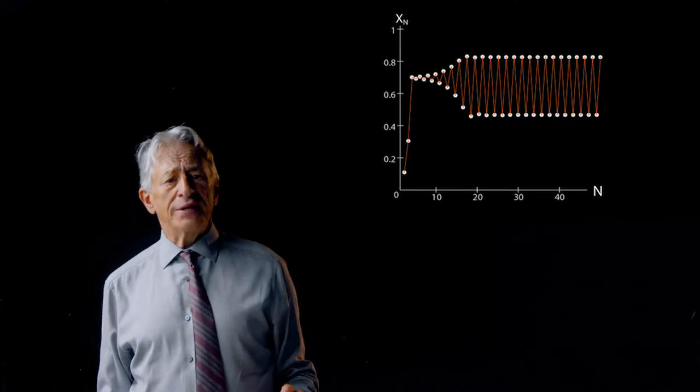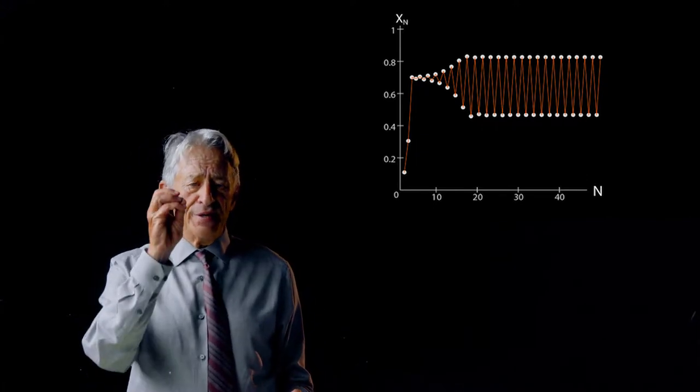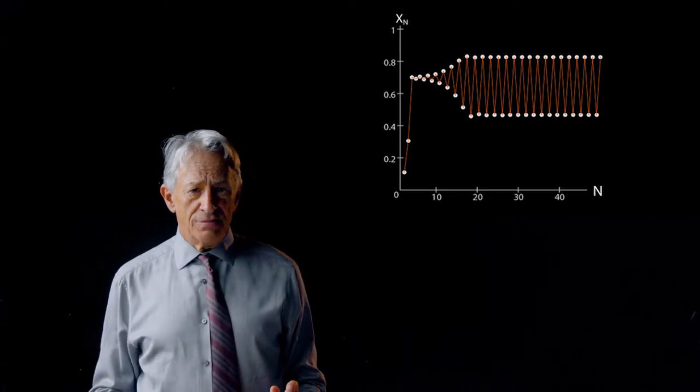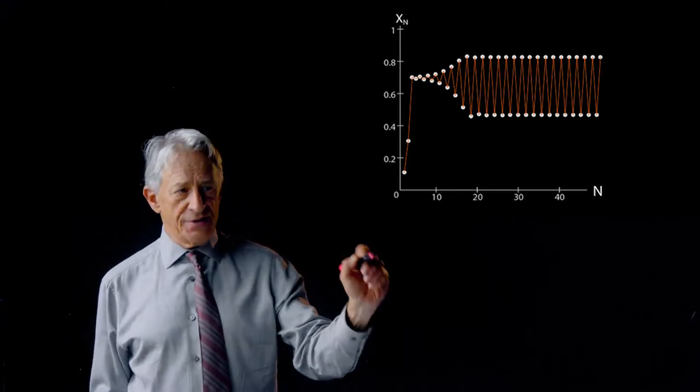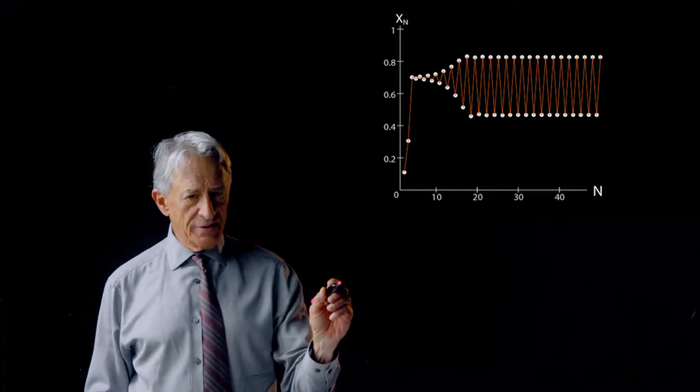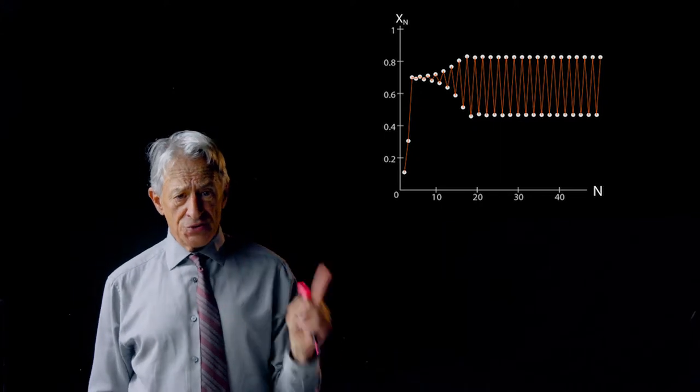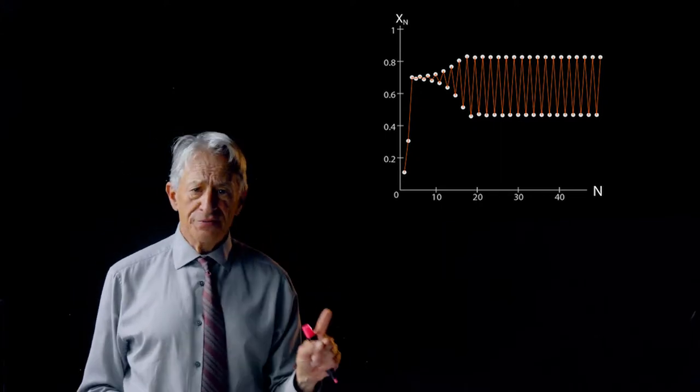It's a two-point oscillation. You can think of it as A, B, A, B, A, B. But the B values are constant, and the A values are constant, and the system is not chaotic. The system is a two-point oscillation between two values.